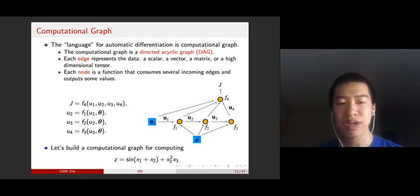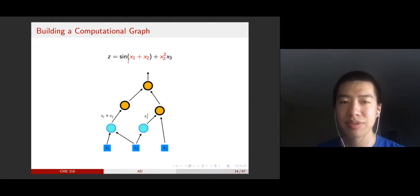Let's try to build a computational graph for computing this expression. The first step is to identify the first computation you need to carry out. This is x1 plus x2 and x2 squared. If those variables are not the output of a node, you just use a blue box for them to mark them as primitive variables.